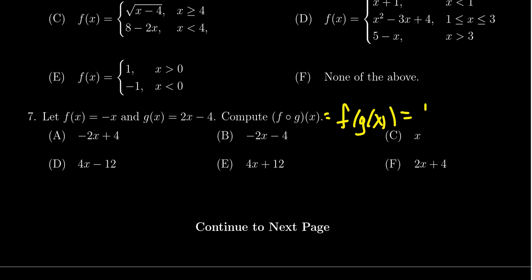And so we have f of x, but we're going to replace g of x with the 2x minus 4. Now we take the formula for f of x right here, and where we see the x, we'll replace it with a 2x minus 4, which gives us a negative 2x minus 4.